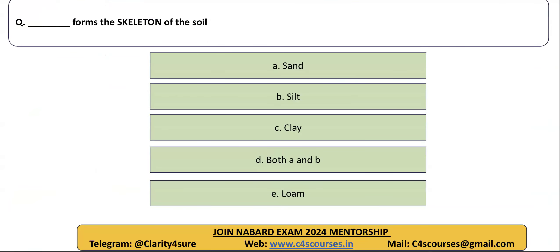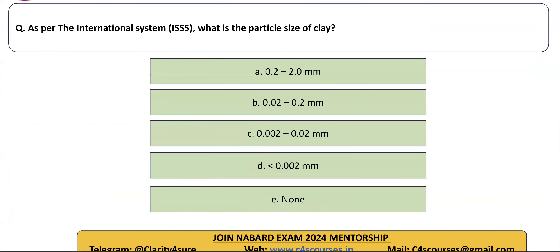Which of the following forms the skeleton of the soil? The right answer is both A and B — sand and silt. Clay is not part of the skeleton of the soil. Next: as per ISSS, which is the particle size of clay? This question has come many times. The answer is less than 0.002 mm.